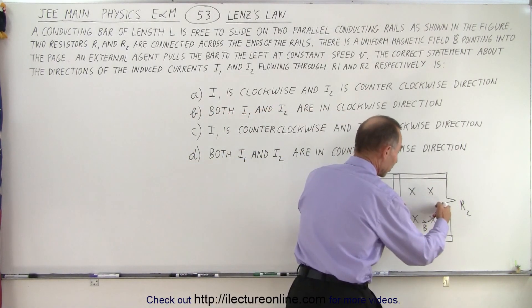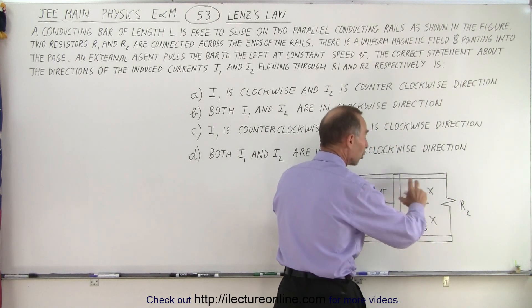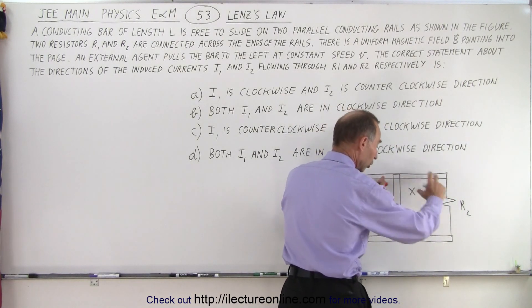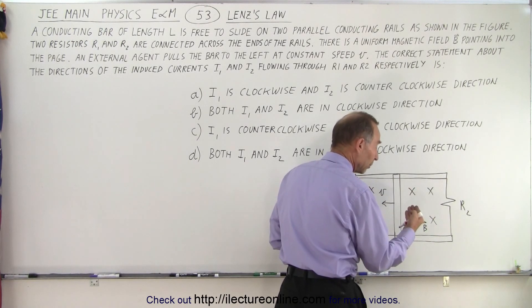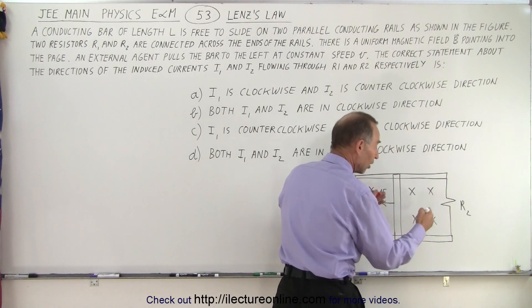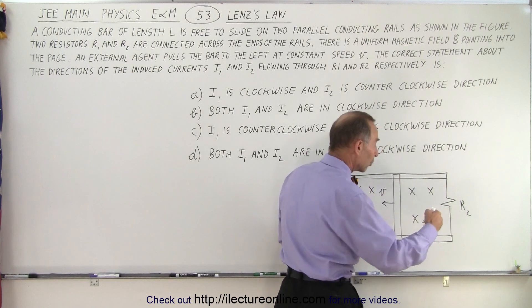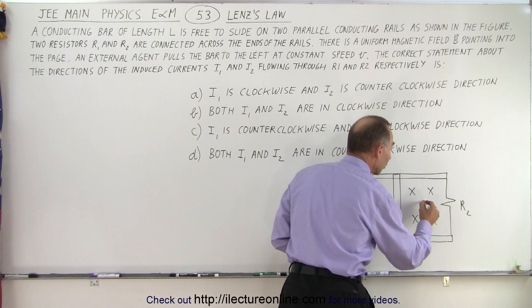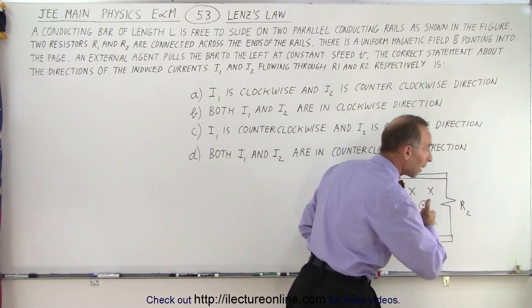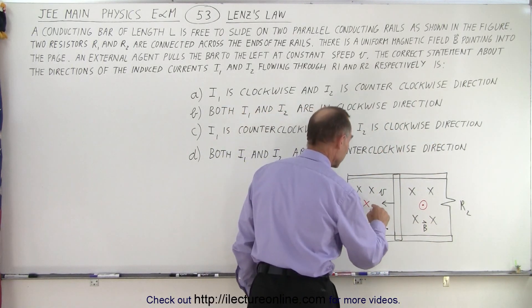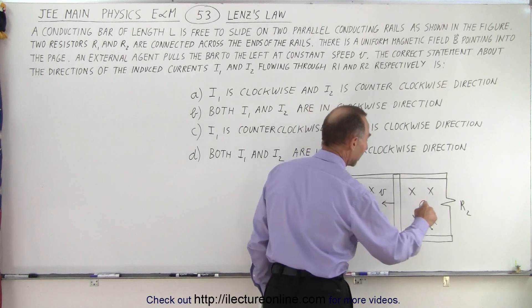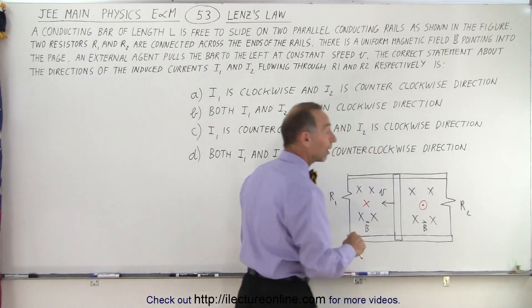On the right side, notice that the area is larger, so more and more magnetic flux will go through the loop. And of course, Lenz's Law says that a magnetic field will be induced that opposes that change. Since more is added, we're trying to oppose that, so what that means is we're going to induce a magnetic field in the opposite direction to keep it from increasing. So that's going to be the induced magnetic field on the left side and the induced magnetic field on the right side.